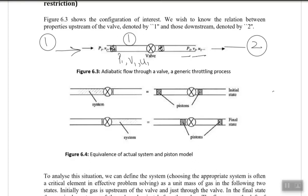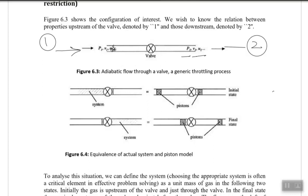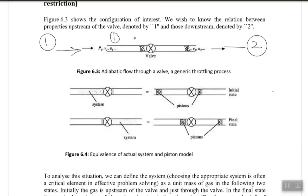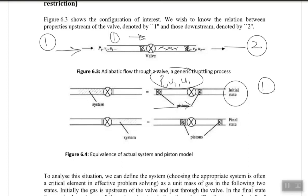Moving to the downstream means moving this volume from state one over to the other side of the wall, which is state two. At state two, imagine again a piston and cylinder. So we are moving from state one — with pressure P1, volume V1, and internal energy U1 — to state two, which is on the other side of the wall, representing the final state.